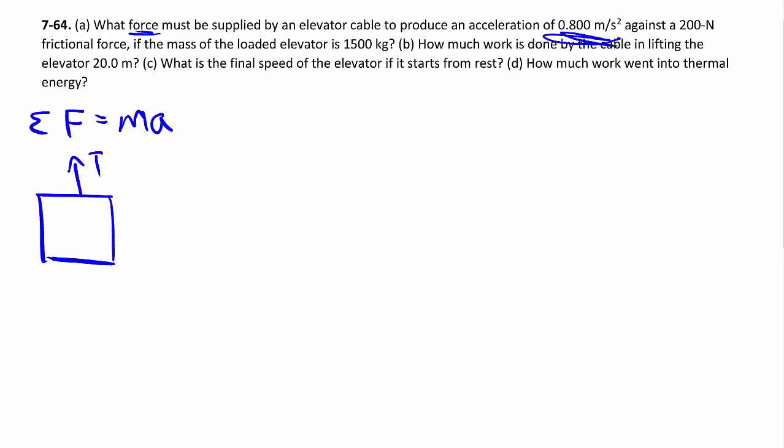There's an elevator cable that supplies some kind of tension, and there is of course mg pulling downwards. They give us some kind of acceleration. Friction, I guess we assume it's upward because it's positive. So since the acceleration is upward, the friction force is going to be downwards. So we know ma is equal to T minus the friction minus mg, and you work out the T.